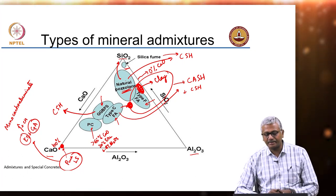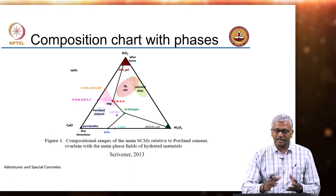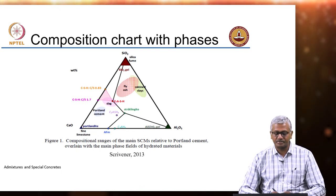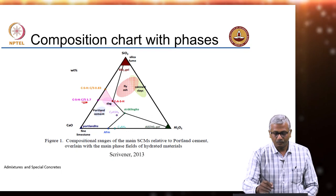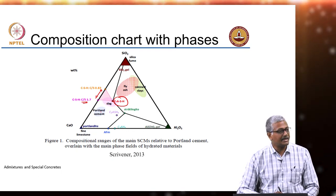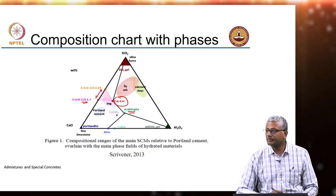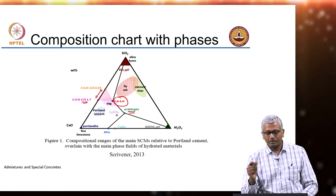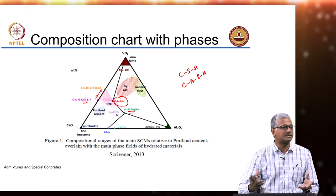So this ternary diagram essentially helps us understand where different phases may be or different types of chemical compositions may lie, and as I said, the type of hydration products will also be dictated by the original composition of your cementitious systems. With Portland cement you will produce a C-S-H with a higher calcium-to-silica ratio; with slag you may have a range of calcium-to-silica ratios and, because of the alumina content, you may also form C-A-S-H — calcium alumino-silicate hydrate phases.